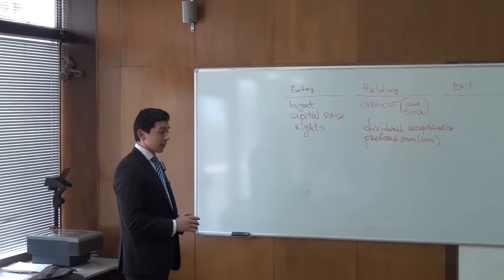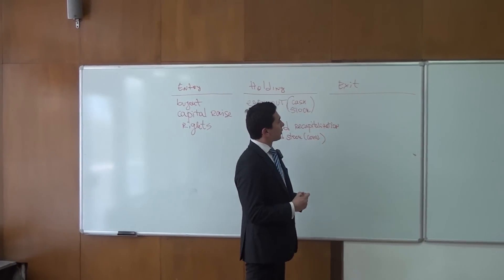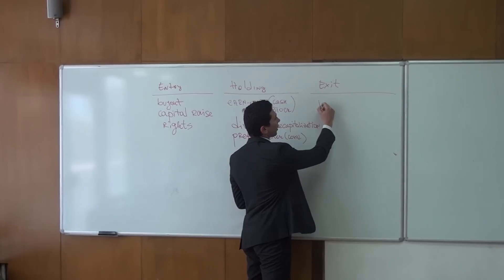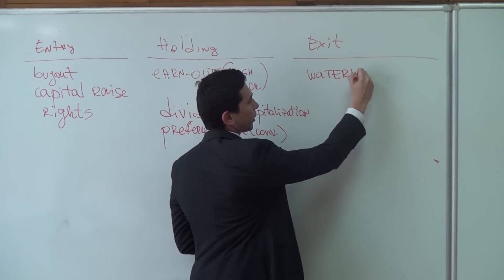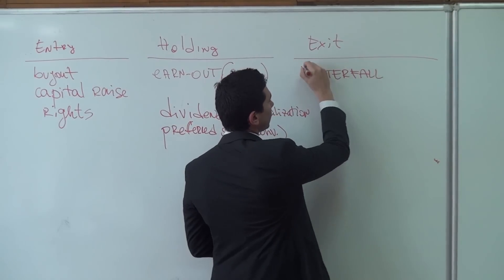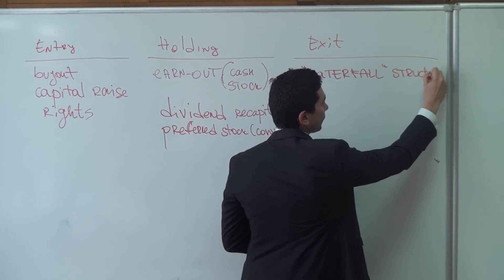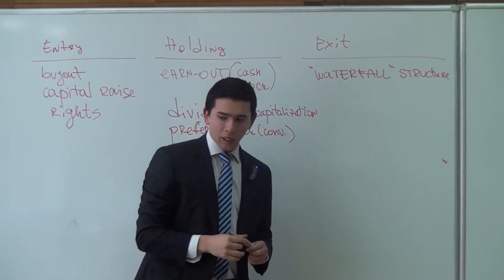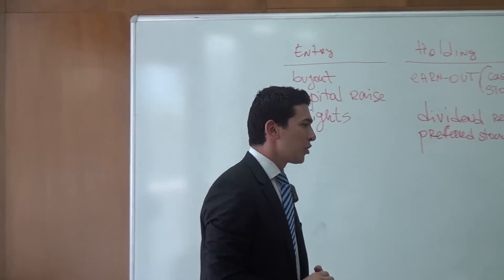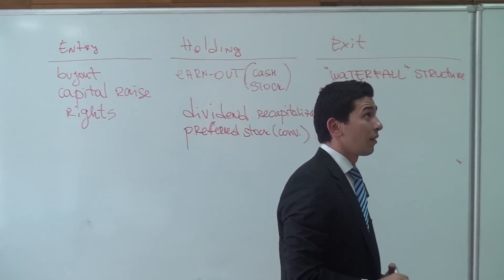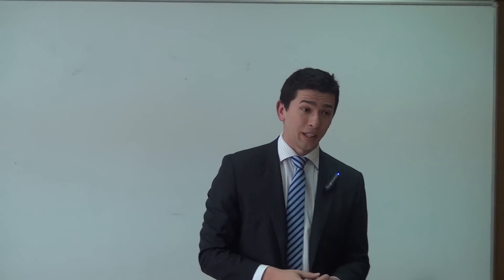Let's cover something at exit as well. I like the waterfall structure quite a lot. Going back to my example — the entrepreneur says his business is worth 4 million and we say it's 1.8 million. He is very adamant about the 4 million number.